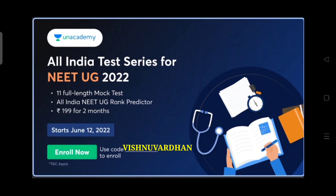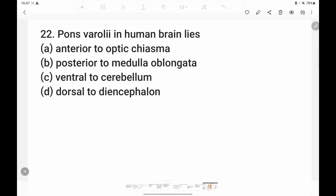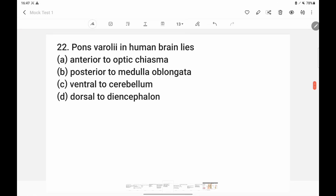The next question is about a point in the human brain. There is a diagram in neural coordination and control. You can see the specific point in the front of the cerebral region.